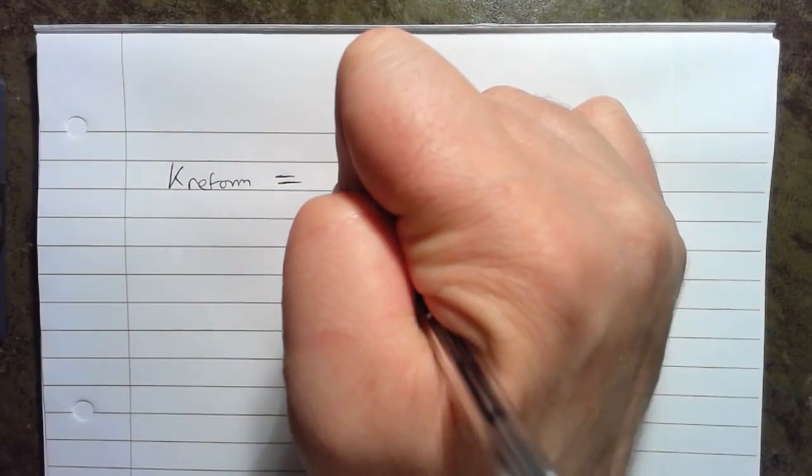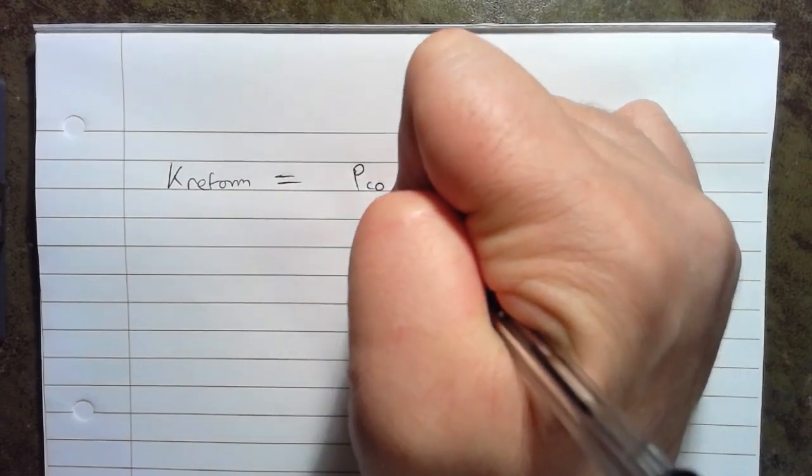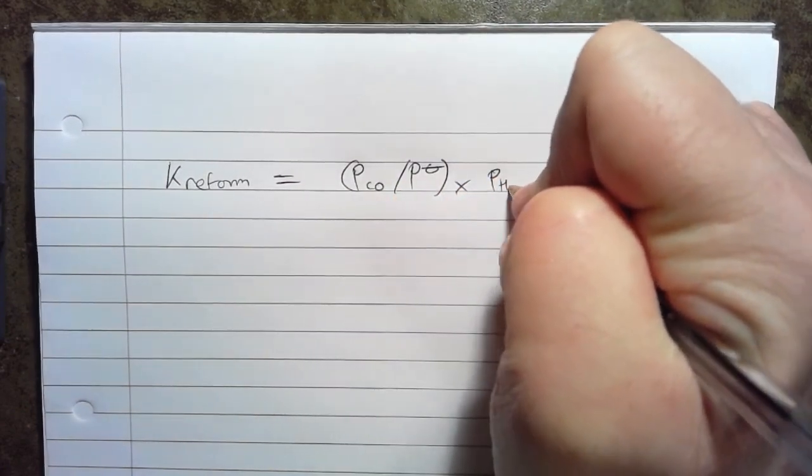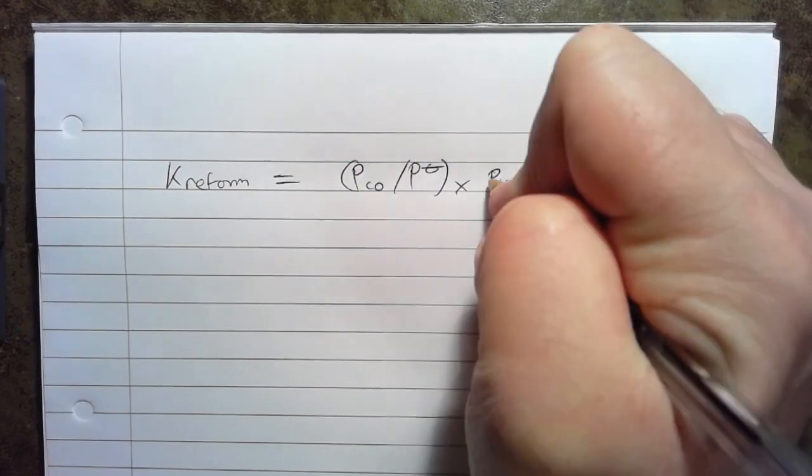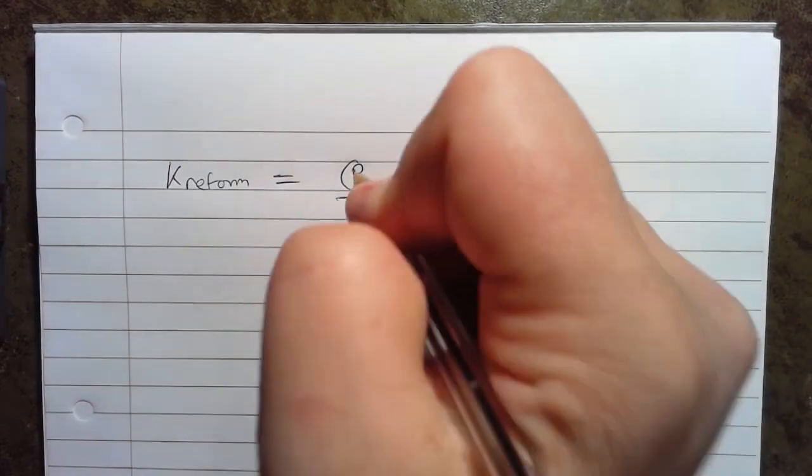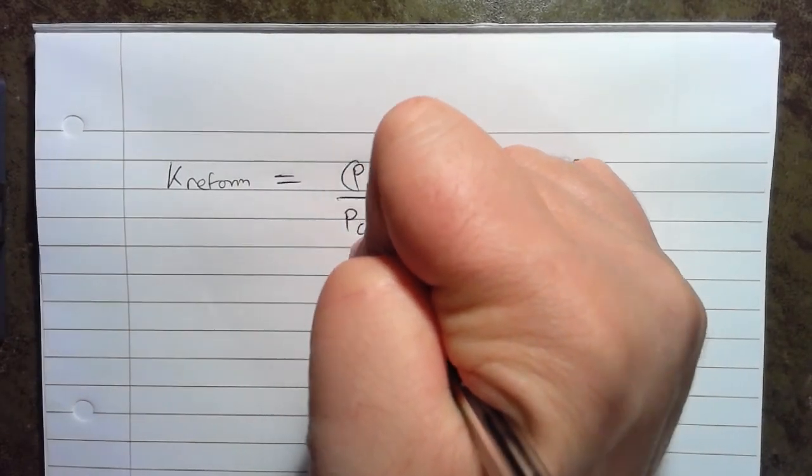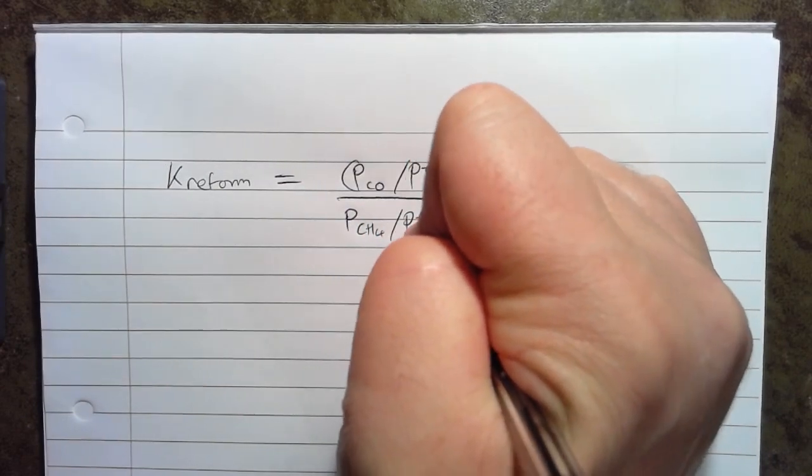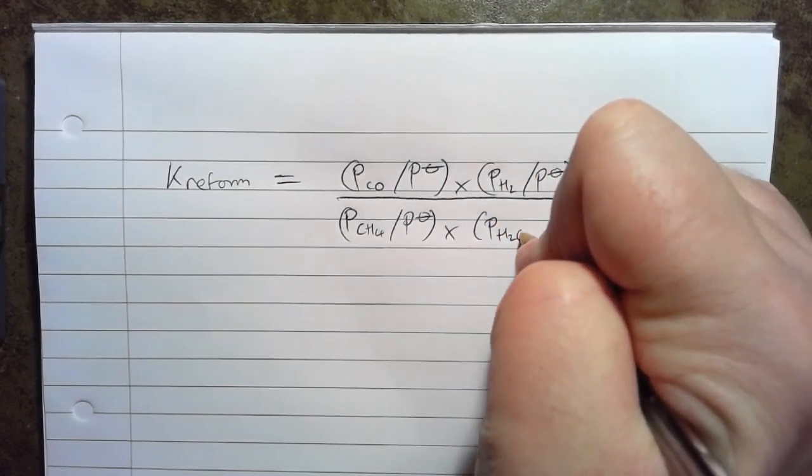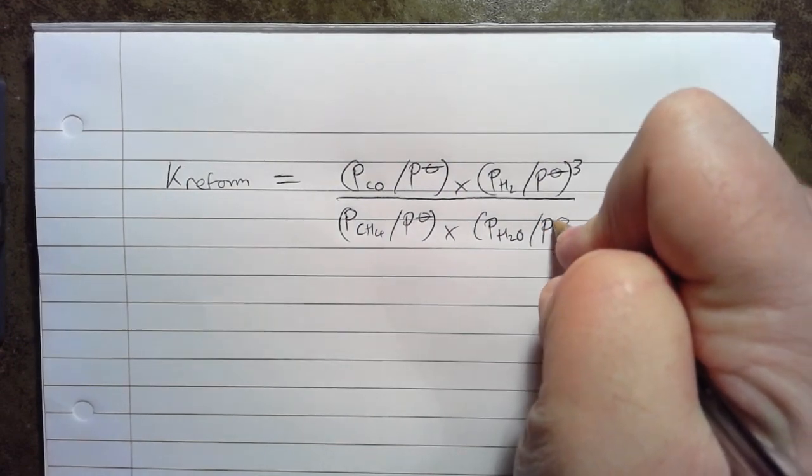So we have K reform for the equilibrium in the reforming reaction and that equals the partial pressure of CO divided by the standard pressure times by the partial pressure of H2 divided by the standard pressure. And we have to cube that due to the stoichiometry of that reaction and then that's all divided by the partial pressure of CH4 divided by the standard pressure times by the partial pressure of H2O divided by standard pressure.